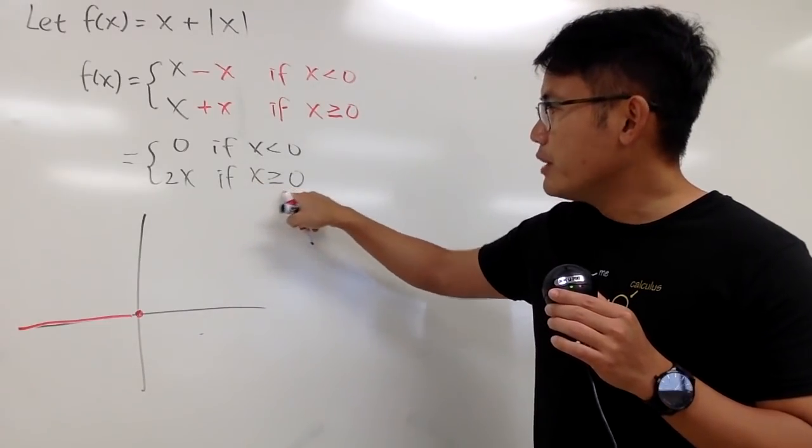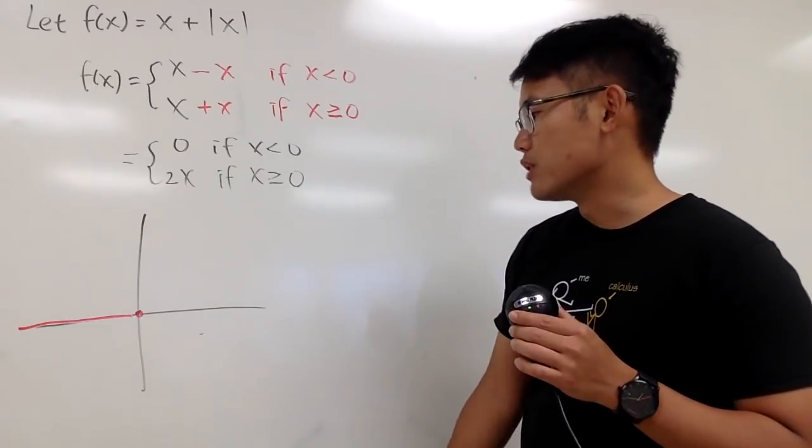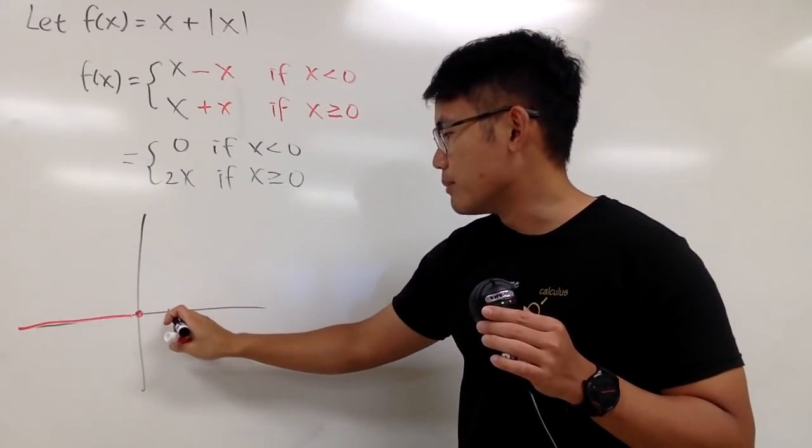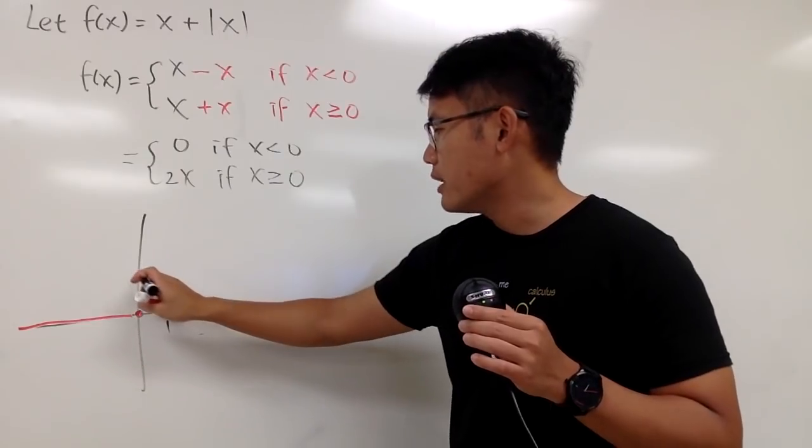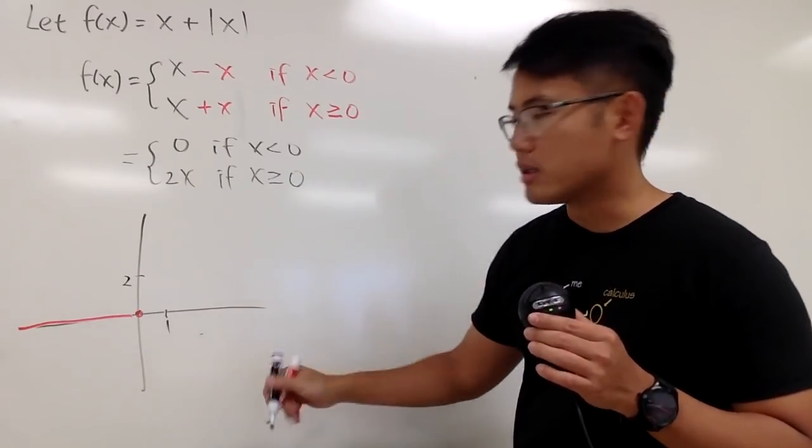And when x is bigger than 0, you have to graph 2x. One of the ways to do it is, of course, you can just plug points. So, for example, when x is equal to 1, the y value is 2. When x is 2, the y value is 4, and so on.